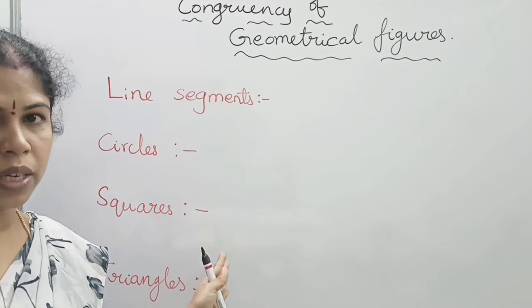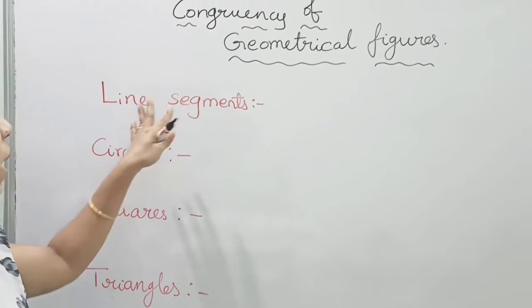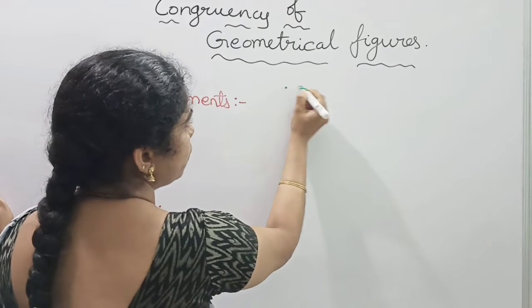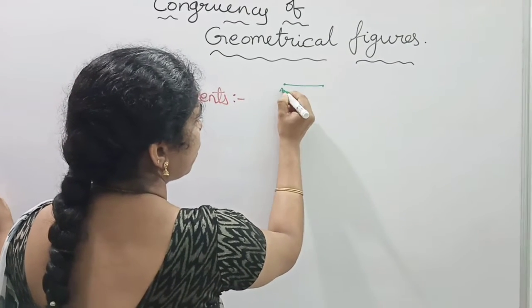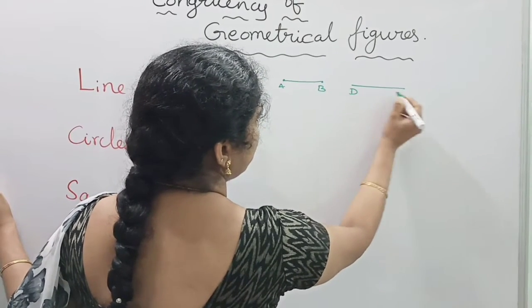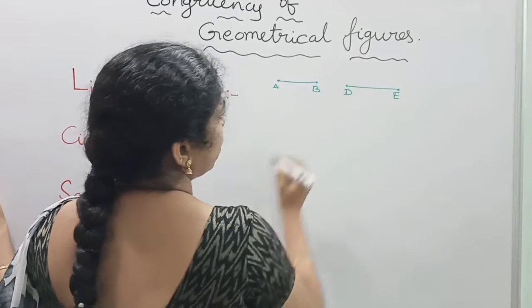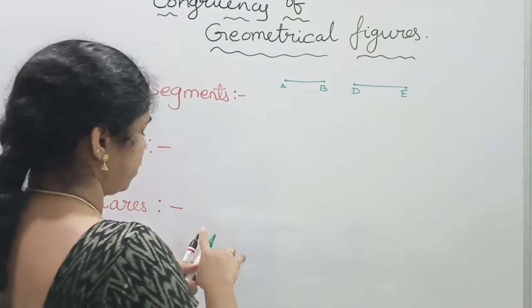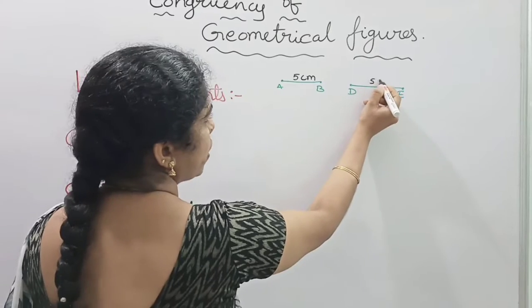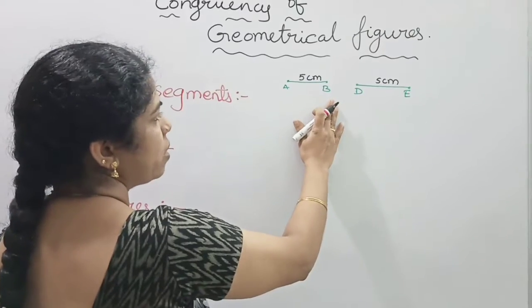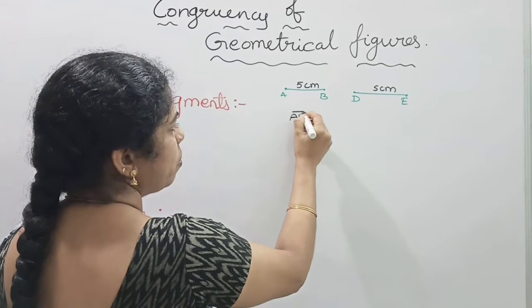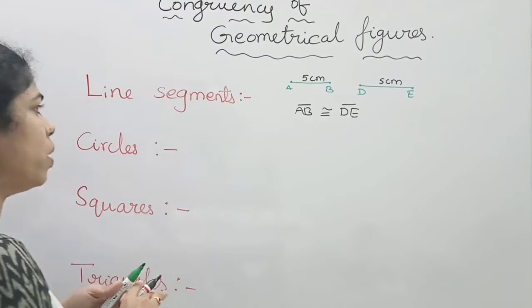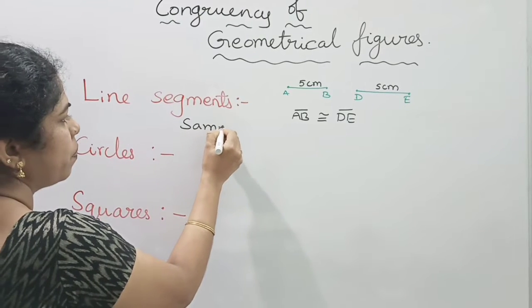Now let us see the congruency of some geometrical figures. If you have two line segments AB and DE, you can say they are congruent when they are equal in length. Suppose AB is 5 cm and DE is also 5 cm — they are equal in length, so we can say line segment AB is congruent to line segment DE. Same length makes them congruent.